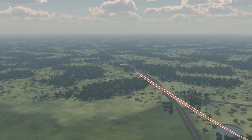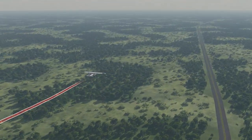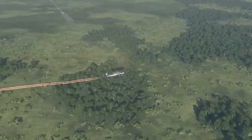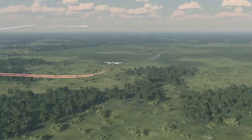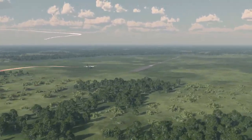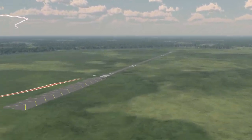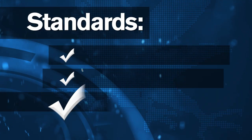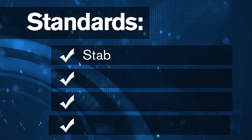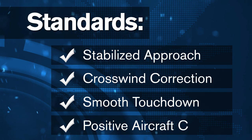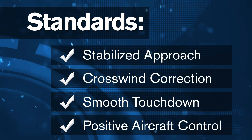Now that we've covered the basics of the normal and crosswind approach and landing, we're going to examine some of the specific procedures and requirements for the maneuver. As with all other maneuvers, there are certain criteria that you will be expected to meet for the end-of-course checkride.